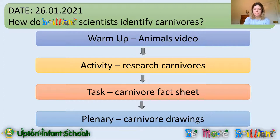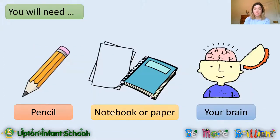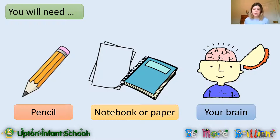So what do you need for today's lesson? Well you're going to need a pencil, and you might want some colouring pencils for our task later on — if you don't have any, that's absolutely fine. You're going to need a notebook or paper. If you're at home you can use your home learning books for this task, and if you're at school you will use your topic books and a worksheet. And of course you're going to need your science brains today — I'm sure you've already got those on.